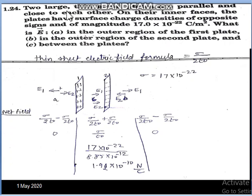Question number 24, this is also a very important question. Two large, thin metal plates are parallel and close to each other. As shown in the diagram, the two plates on their inner faces have surface charge density, symbol sigma, with value 17×10⁻²² C/m². These are of opposite signs - a positively charged plate and a negatively charged plate, numbered one and two.